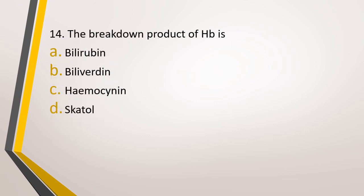Question number 14. The breakdown product of hemoglobin is. Option A: Bilirubin. Option B: Bilirubin. Option C: Hemocyanin. Option D: Skatol. The correct answer is option A, bilirubin. And what is bilirubin? It is a bile pigment.